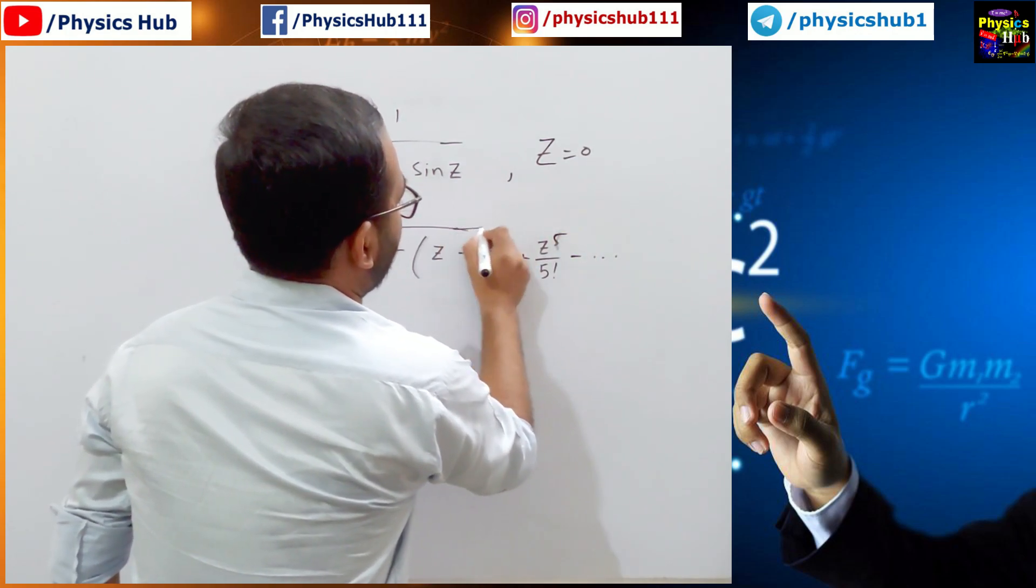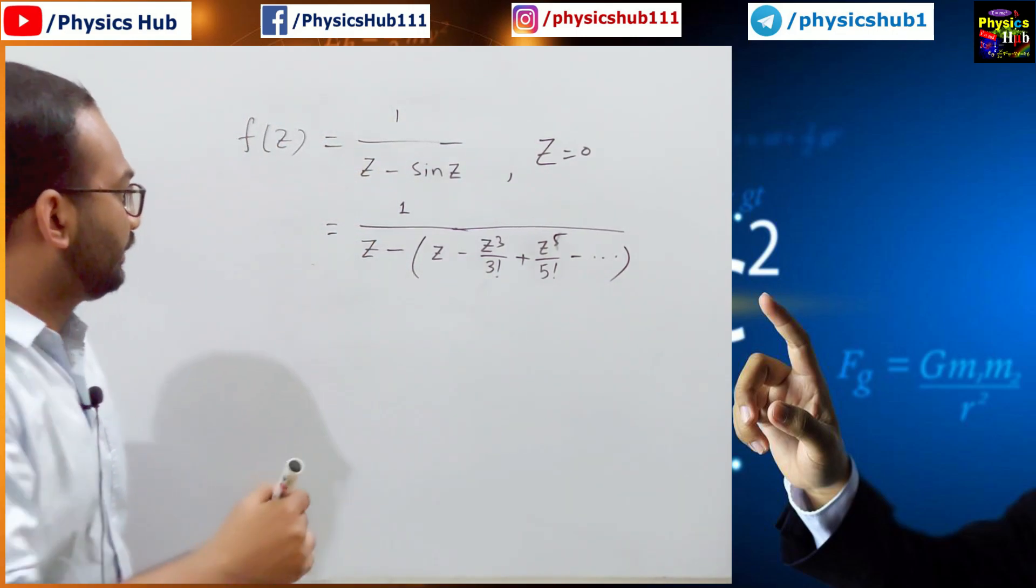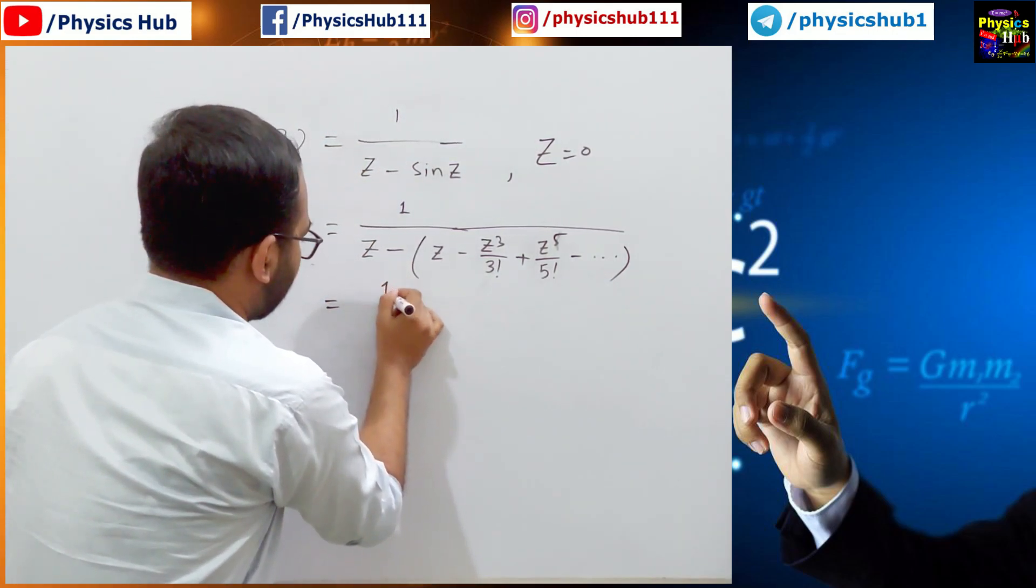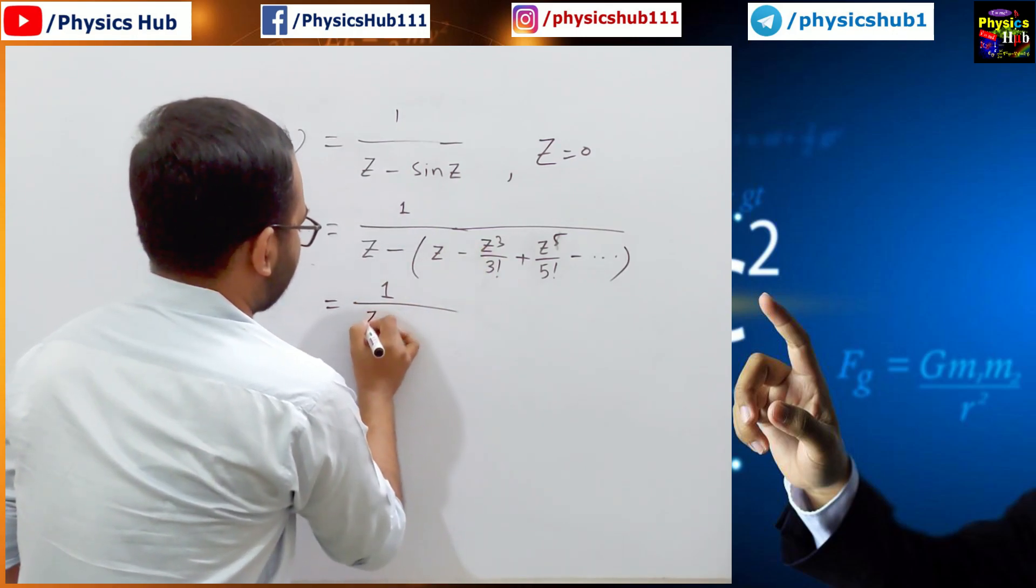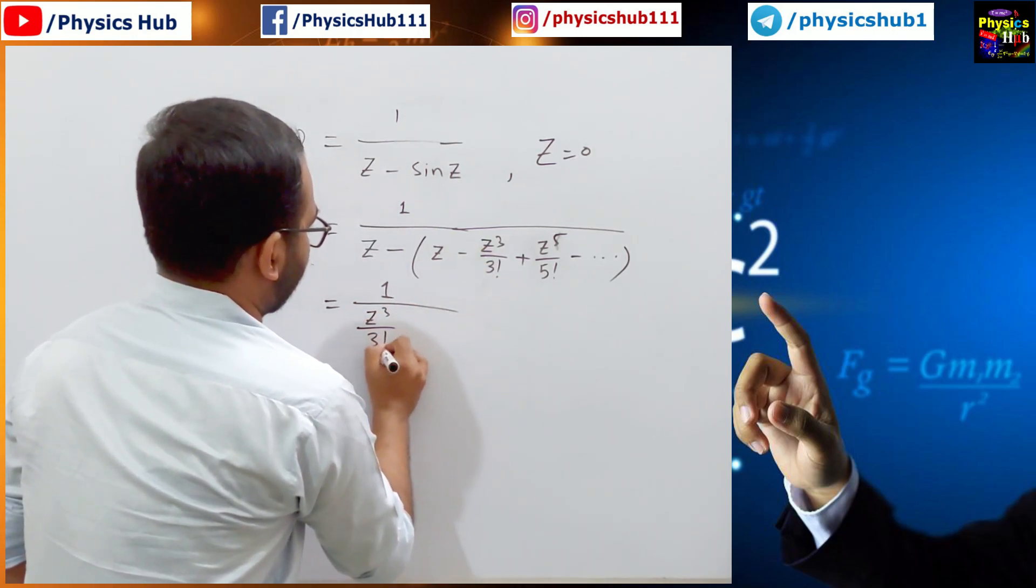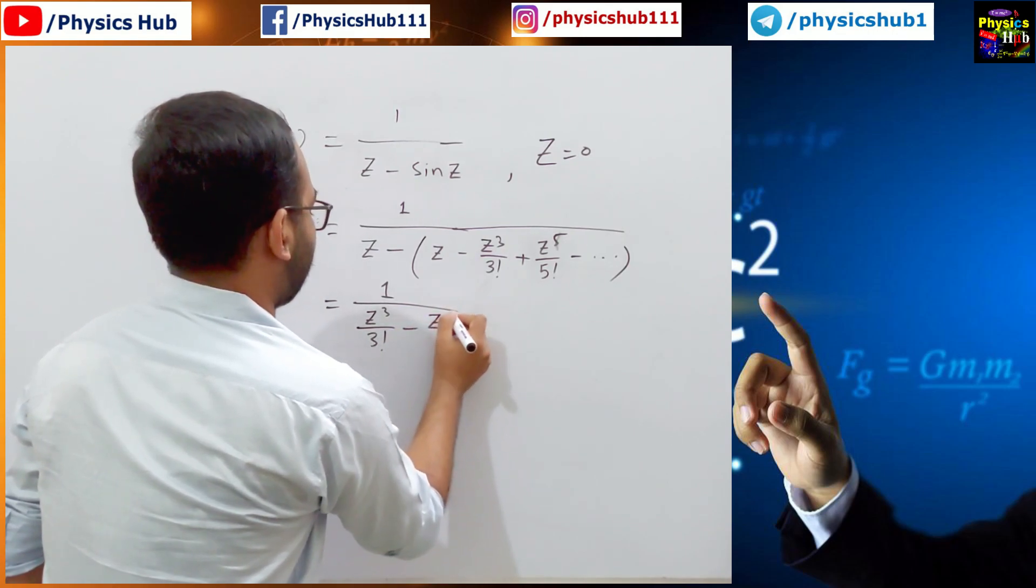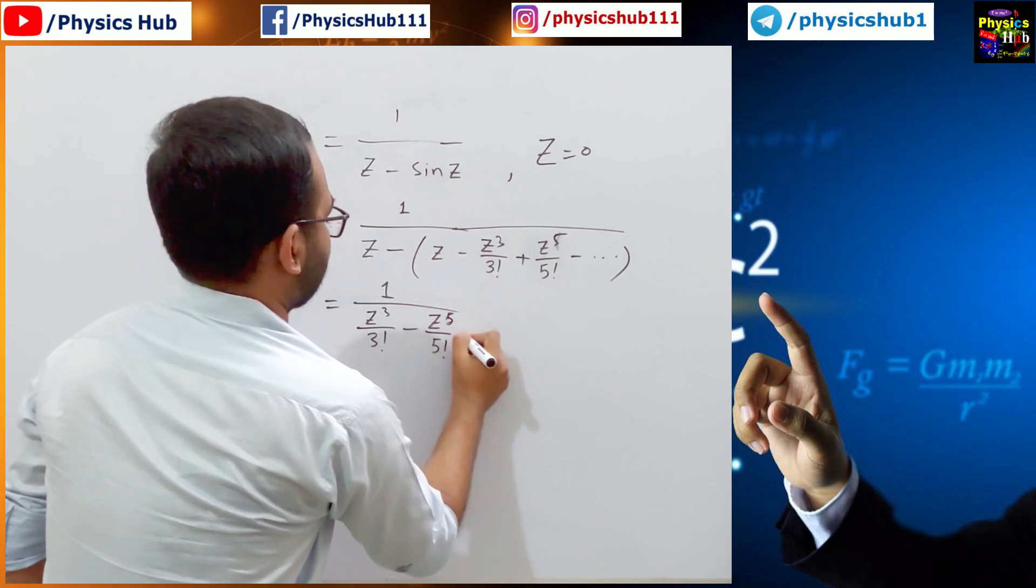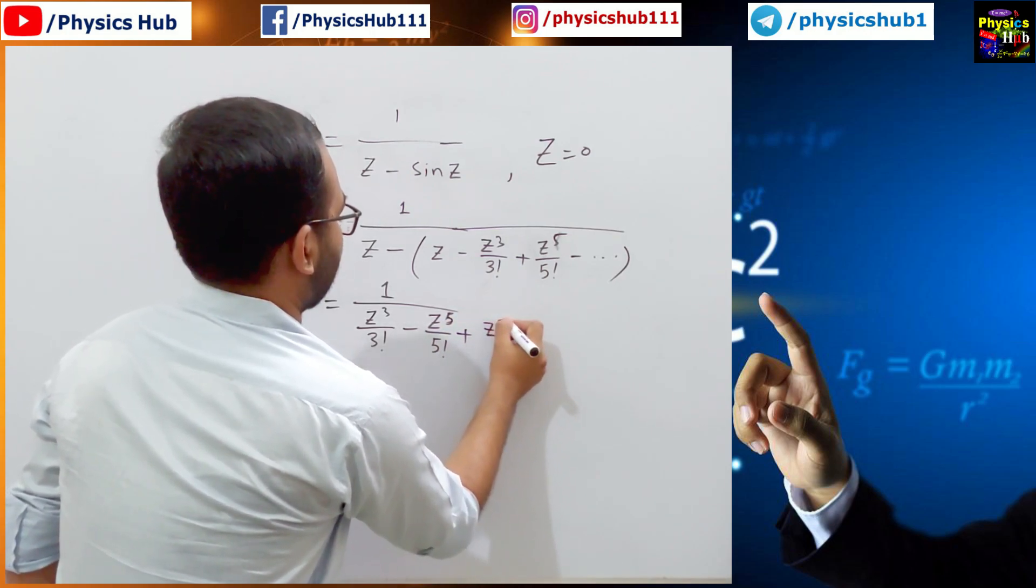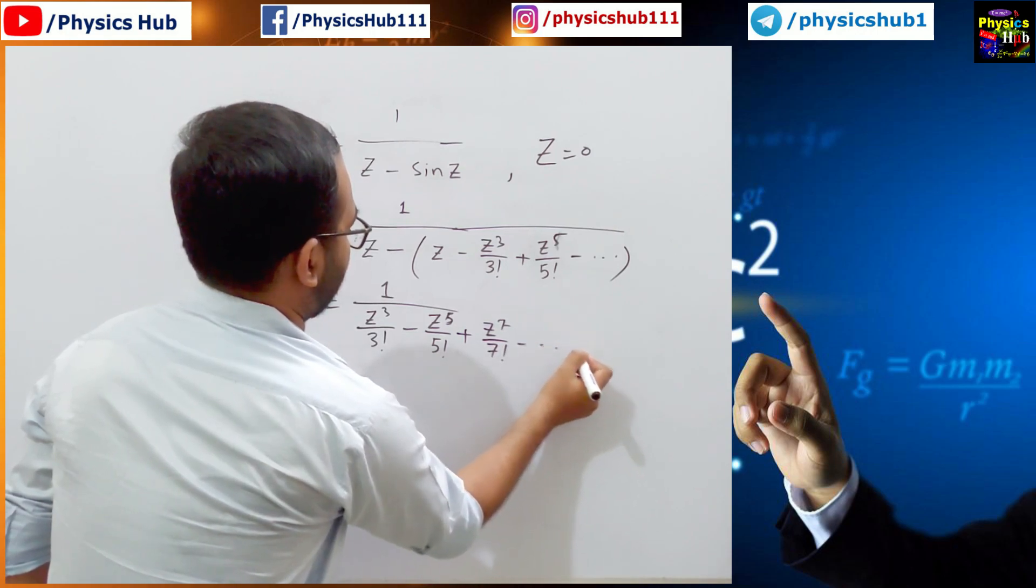So we can write this in this way. This becomes 1 upon, z minus z is 0, and minus minus plus, so z cubed by 3 factorial minus z to the power 5 by 5 factorial plus z to the power 7 by 7 factorial and so on.